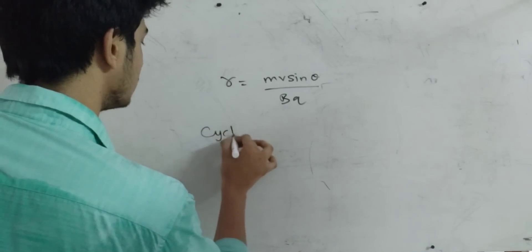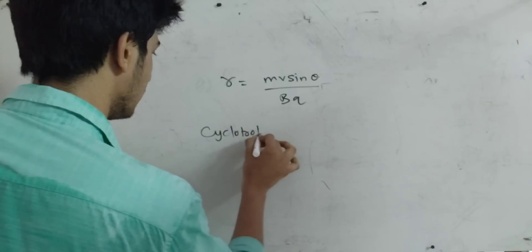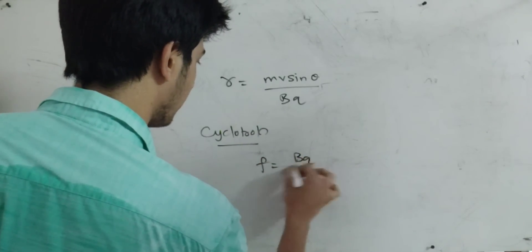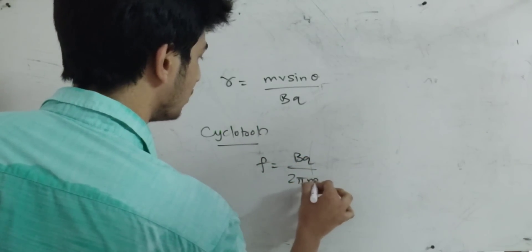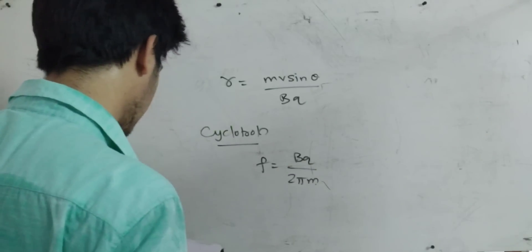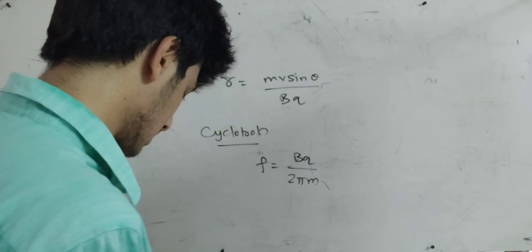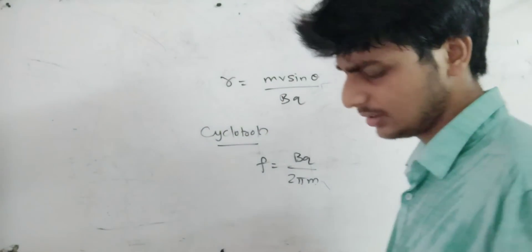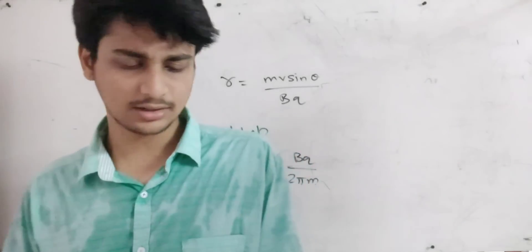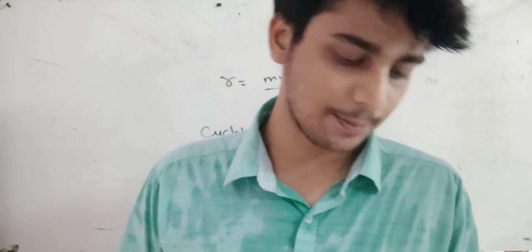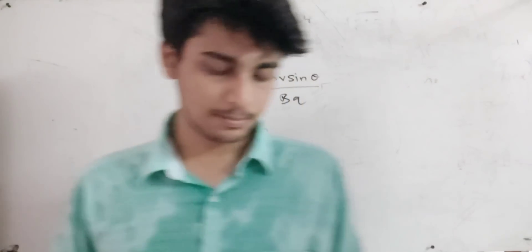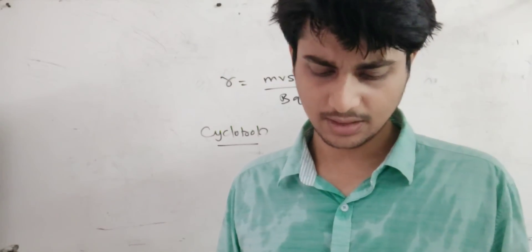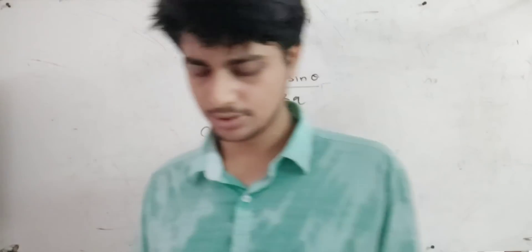Cyclotron frequency is bq divided by 2πm, where m means mass, b means magnetic field, and q means charge. Kinetic energy: b squared q. When you derive the derivative, there are tough questions. Magnetic dipole moment at any point.